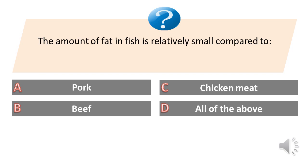The amount of fat in fish is relatively small compared to: A. Pork. B. Beef. C. Chicken meat. D. All of the above. The answer is D. All of the above.